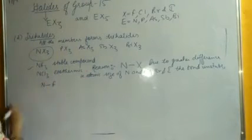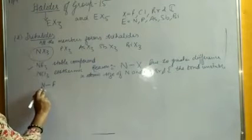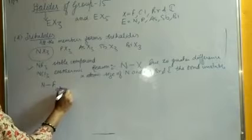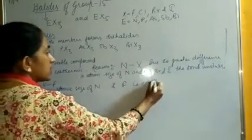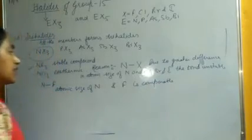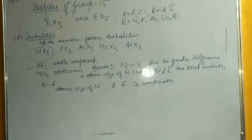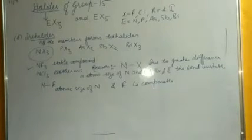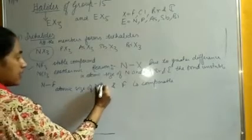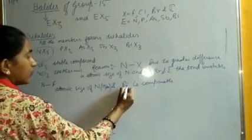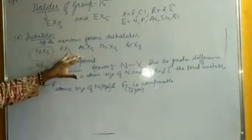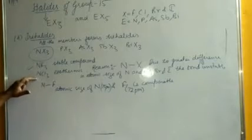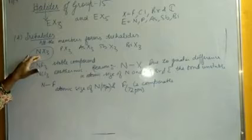Whereas for N–F, the atomic size of nitrogen and fluorine is comparable. Nitrogen is 75 picometers and fluorine is approximately 72 picometers. Hence the N–F bond is stable and NF3 is formed. So NF3 is a stable compound, whereas the rest of the halides of nitrogen are unstable. Other members of this group — phosphorus, arsenic, antimony, and bismuth — form halides EX3, AsX3, SbX3, and BiX3, with almost all halogen atoms involved.